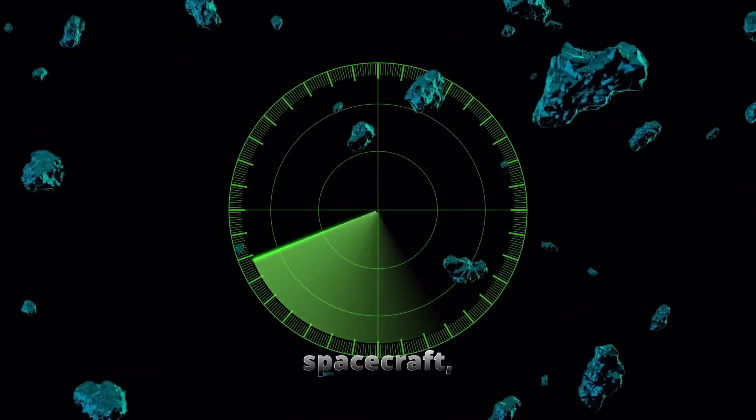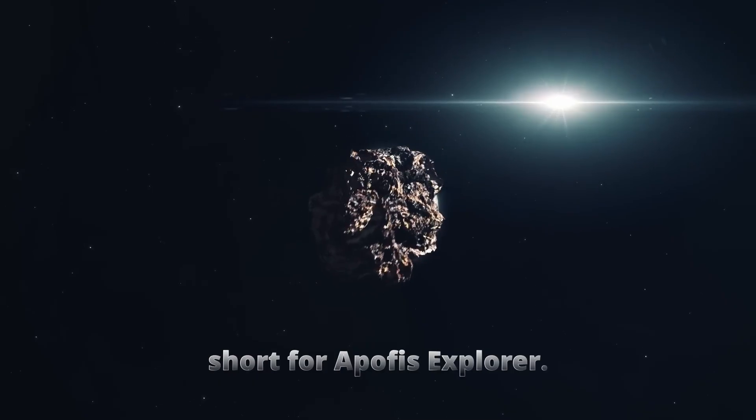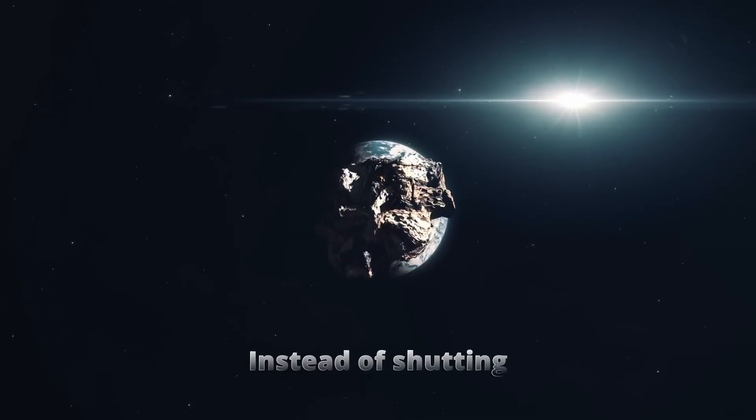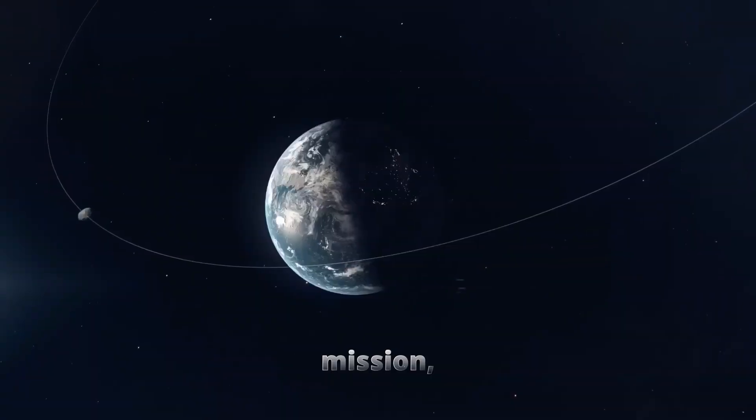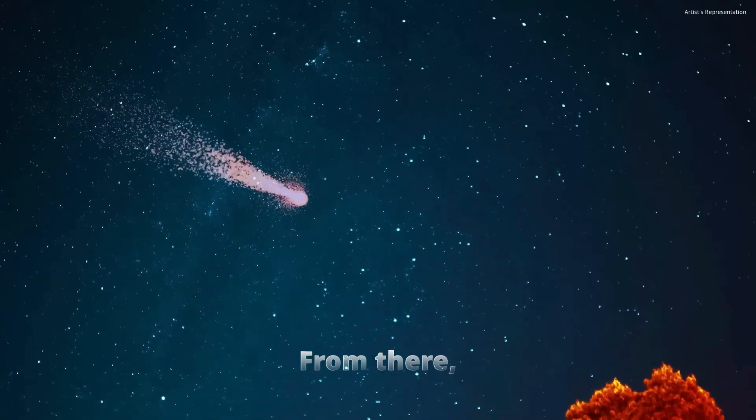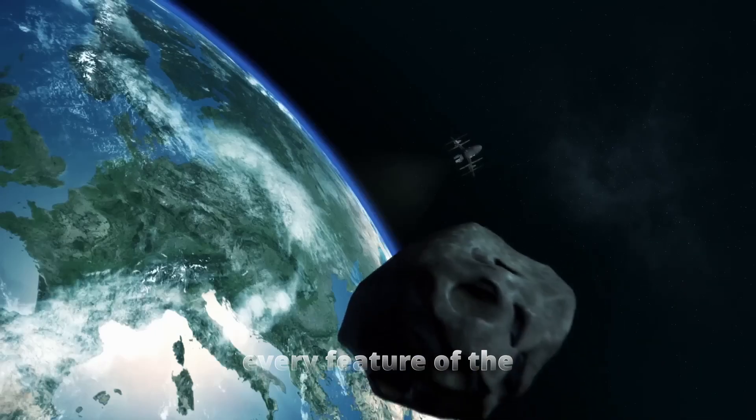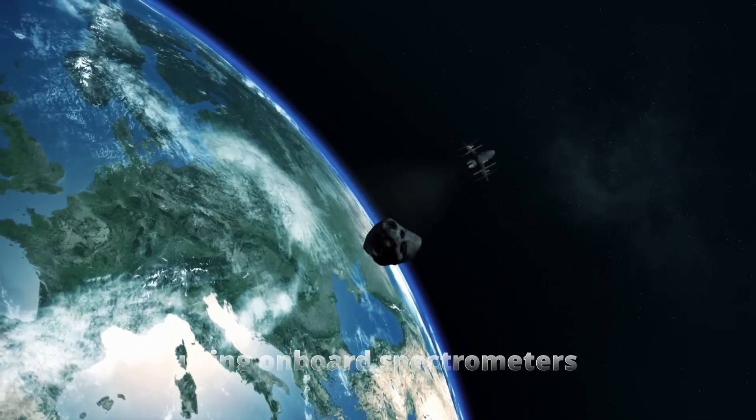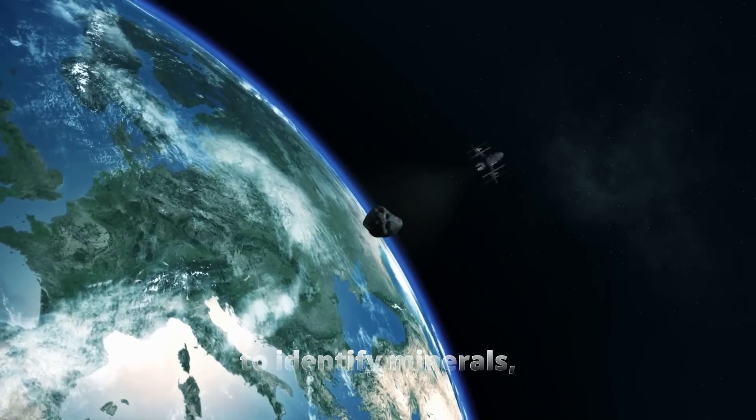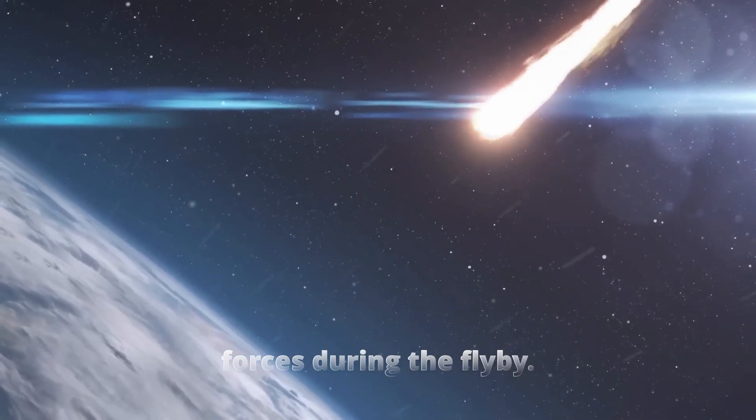NASA plans to take full advantage. Its OSIRIS-REx spacecraft, fresh from collecting samples from the asteroid Bennu, has been reassigned to a new role and renamed OSIRIS-APEX, short for Apophis Explorer. Instead of shutting down after its original mission, it will chase Apophis, arrive after the close pass, and match its orbit. From there, it will study the asteroid up close for over a year. That means mapping every feature of the surface in detail, using onboard spectrometers to identify minerals and watching for any changes caused by Earth's tidal forces during the flyby.